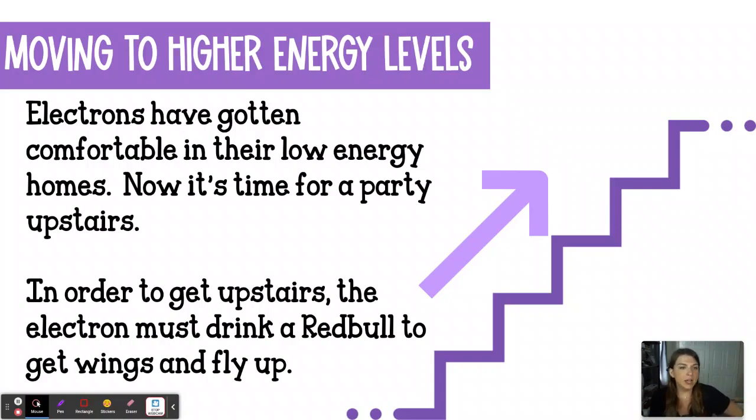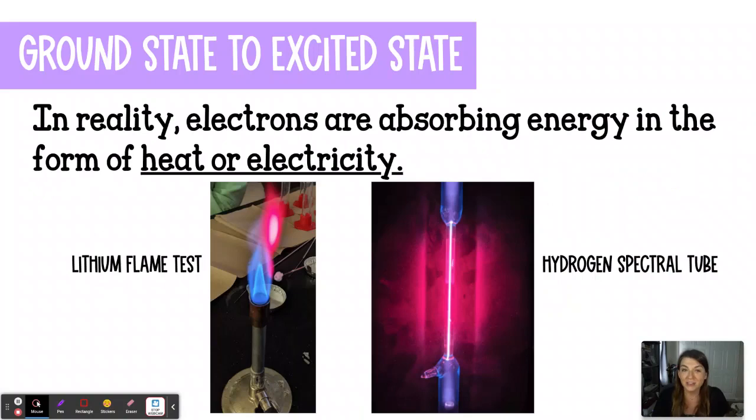The electrons have gotten comfortable in their low energy homes and it's time for a party upstairs. In order to get upstairs, the electrons are going to have to drink a Red Bull. They got to get some energy. It's a late night party. Everybody just moved in, exhausted from carrying all these boxes in and moving in and unpacking. So they're going to drink a Red Bull to get some wings and fly up. In reality, the electrons are absorbing energy. They're getting energy from absorbing either heat energy or electricity.